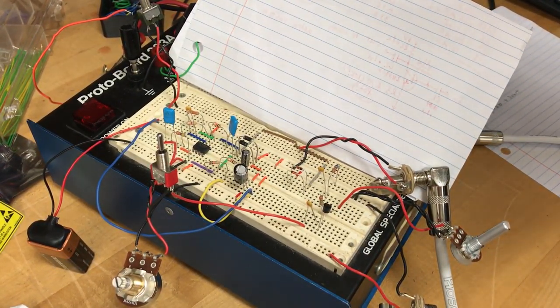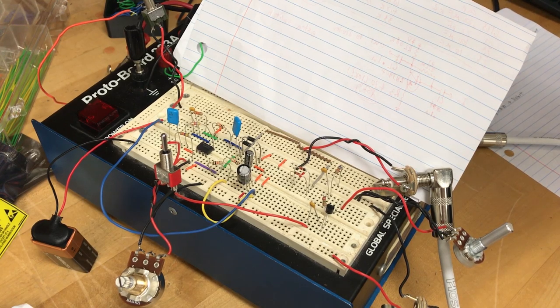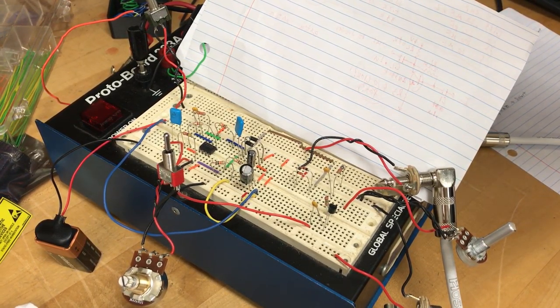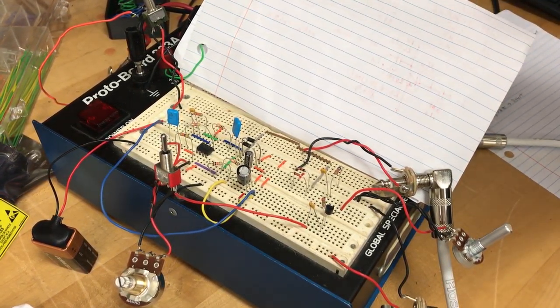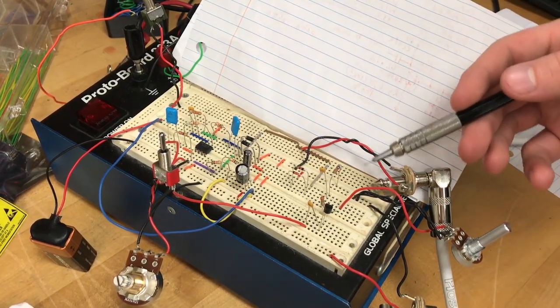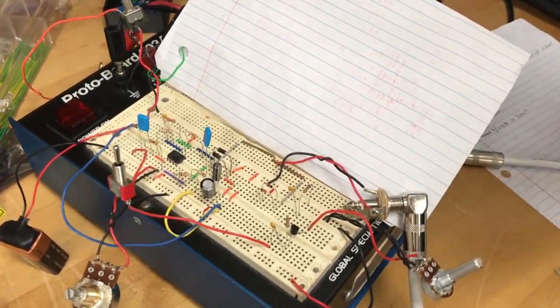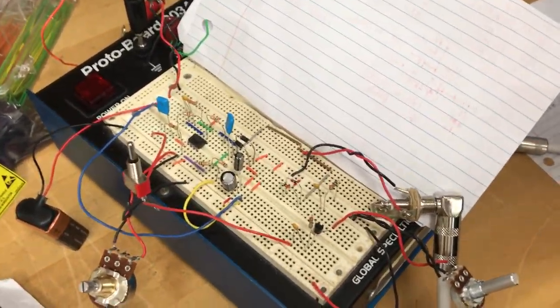For this one, I wanted to explore two different types of fuzz box. One uses an op-amp that creates the fuzzy sound, and the other uses a transistor which creates a much more distorted, noisy sound.